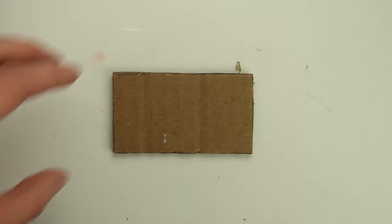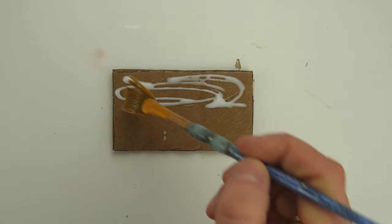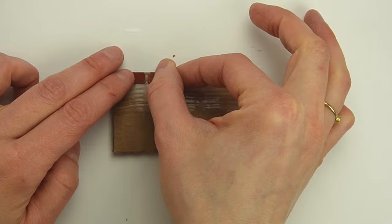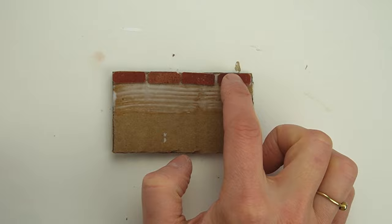I'll show you two methods for applying your bricks that give you a completely different look. I'll call this first method the grout method. For this method, I'm laying the bricks directly into some white glue. I'm placing the bricks approximately where they should go, and while the glue is still wet, sliding them into their final position.